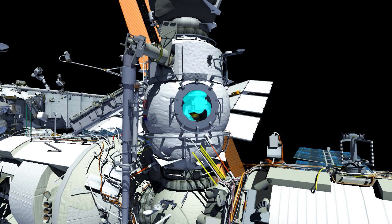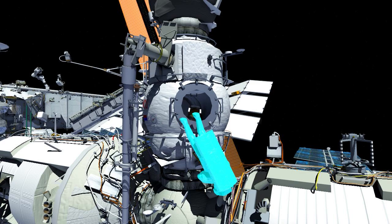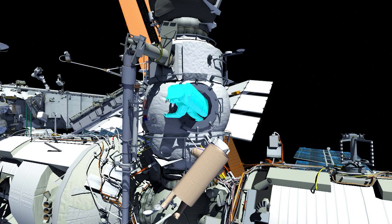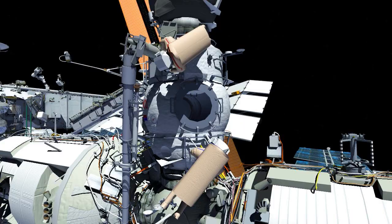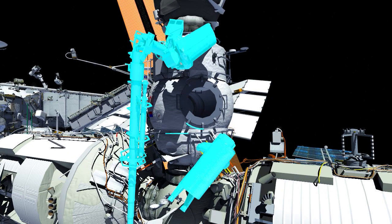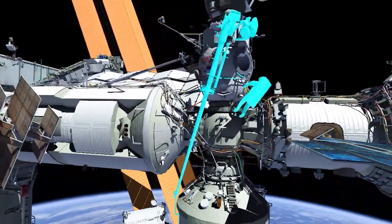To start the spacewalk, the crew will egress the Poisk airlock, turn on the helmet video and lights, and begin translation to the radiator on the Nauka module using Strela-1, a telescopic pole that can be used as a crane to move crew and equipment around.